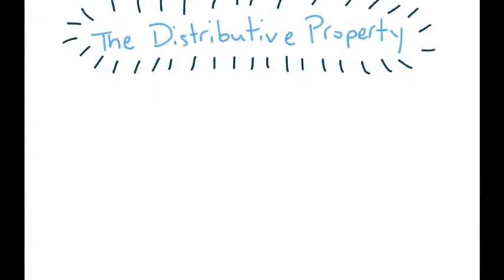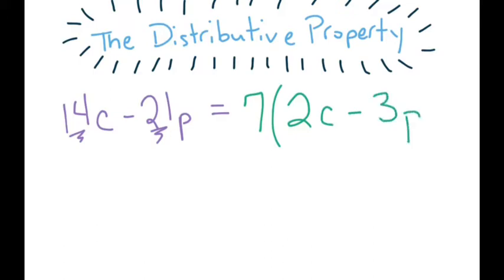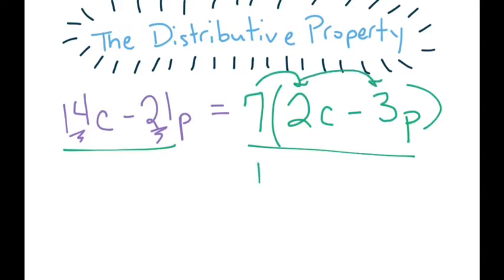Let's do one more example with the distributive property — this time dividing out from an algebraic expression. We need to find the greatest common factor of the coefficients. The greatest common factor of 14 and 21 is 7. Taking the 7 out: 14 divided by 7 leaves me 2c, and 21 divided by 7 leaves me 3p. So these two are equivalent expressions. To prove it, redistribute the 7 back into the parentheses — 7 times 2c is 14c and 7 times 3p is 21p — getting 14c minus 21p back.